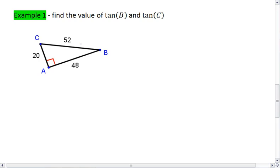For tangent B, I'm looking at this angle here. Remember, tangent is opposite over adjacent. That's our TOA.